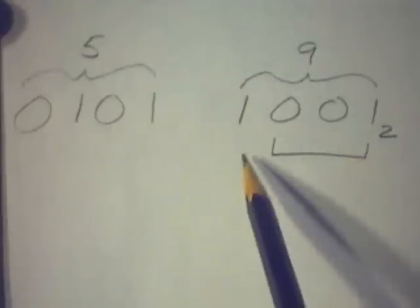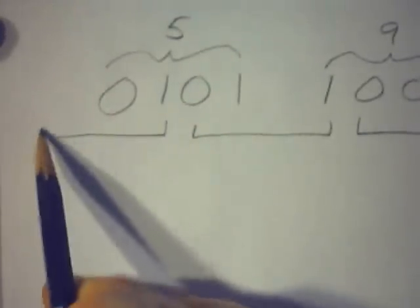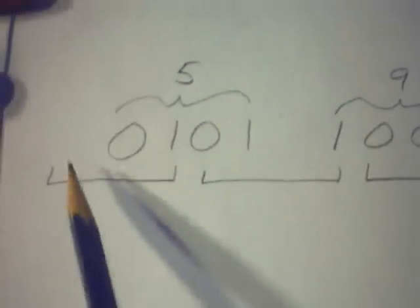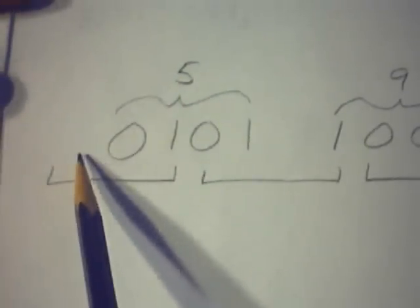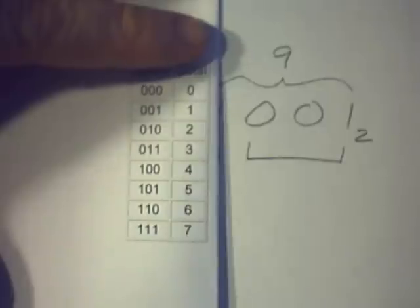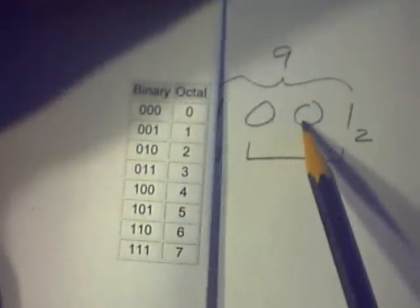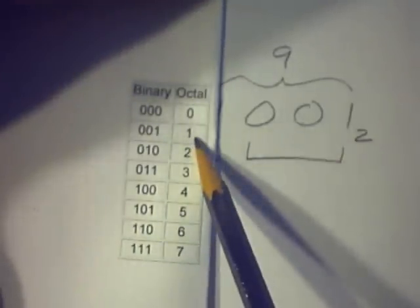So, here is a group of three. There is a group of three. And there is a group of three. So, it's really understood that there's an extra zero out over here for that one. All right, looking at the first group of three, 0, 0, 1 corresponds to octal number 1.